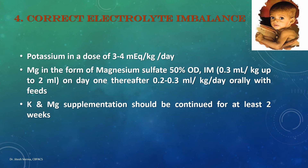Electrolyte imbalance correction: potassium is given at 3–4 mEq per kg per day. Magnesium sulfate 50% is given IM at 0.3 ml per kg on day 1 (maximum 2 ml), then 0.2–0.3 ml per kg from day 2 onwards. Potassium and magnesium supplementation should be continued for at least two weeks after electrolyte balance is corrected.